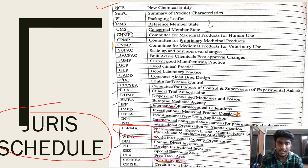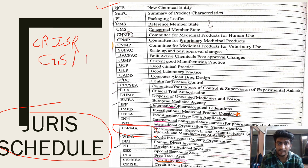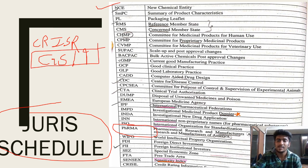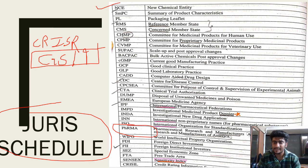CRISPR-Cas — this time CRISPR-Cas, a gene editing technique. They might ask you about gene editing because of zinc finger nucleases and TALEN — these are other technologies being used alongside CRISPR-Cas.